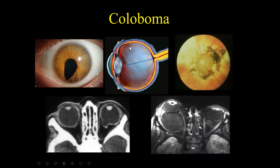The next area is the uveal tract, shown here in pink. Back when I was in medical school, what I learned was that a coloboma — which is seen here — was a defect in the iris. I specifically remember seeing this on my ophthalmology rotation.